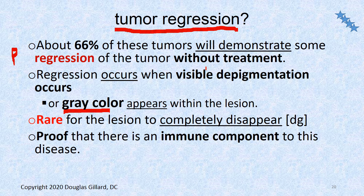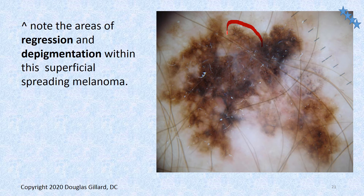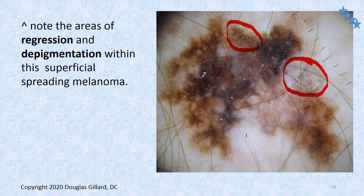Here's a dermoscope view of a superficial spreading melanoma that hasn't yet entered the vertical growth phase. You can see a reticular formation — it looks like spider webs — which is a sign of cancer not visible to the naked eye. There's also a large area of regression and depigmentation — a hole in the lesion — which also indicates melanoma.